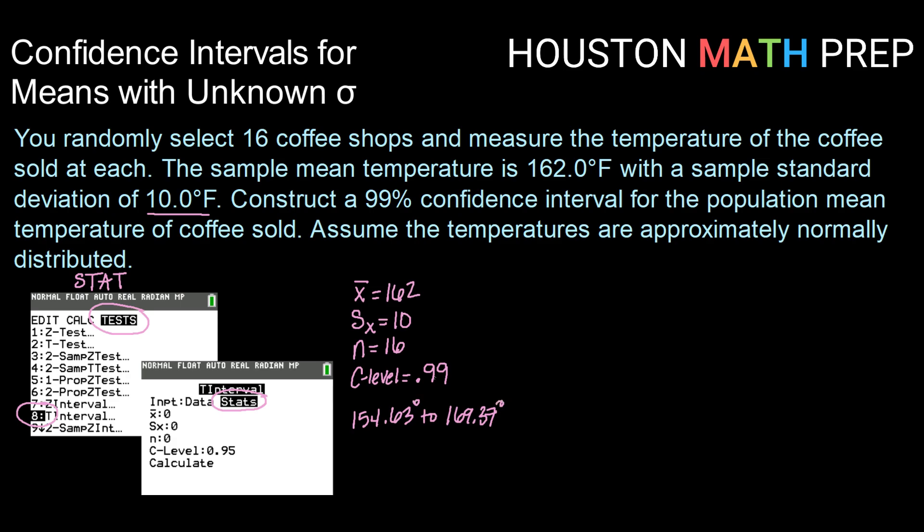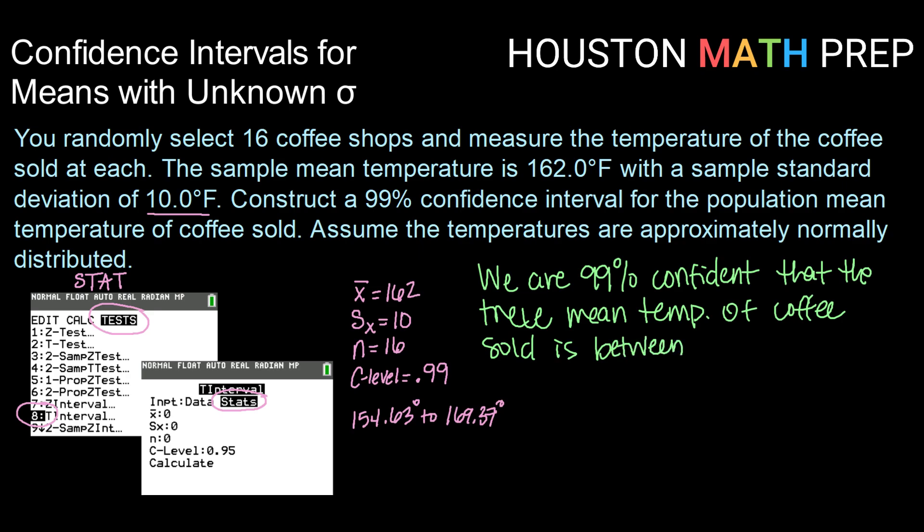If we put that together into a statement and interpret, making sure to state the level of confidence, our interval, and use the context of the problem, then we get that we are 99% confident that the true mean temperature of coffee sold is between 154.63 degrees Fahrenheit and 169.37 degrees Fahrenheit.